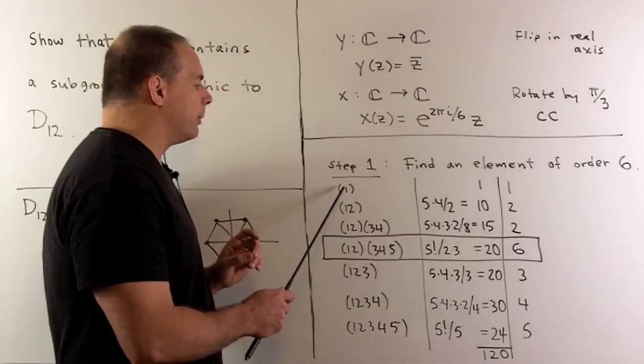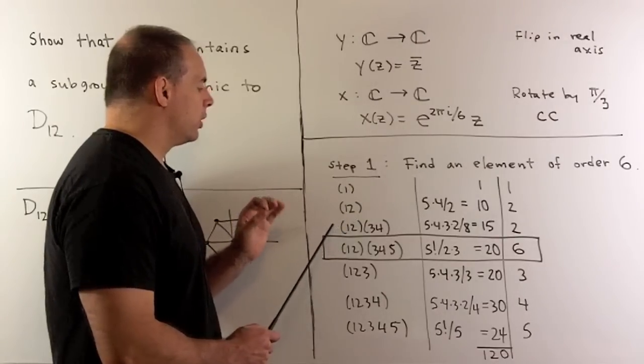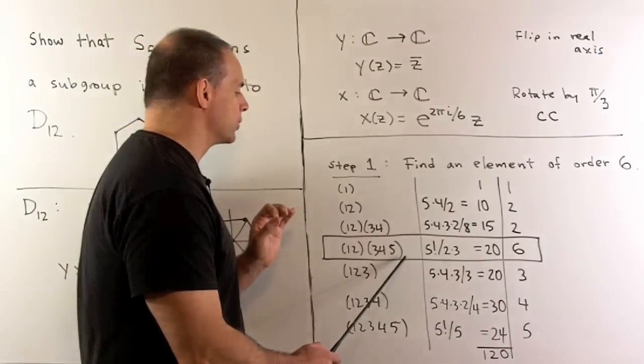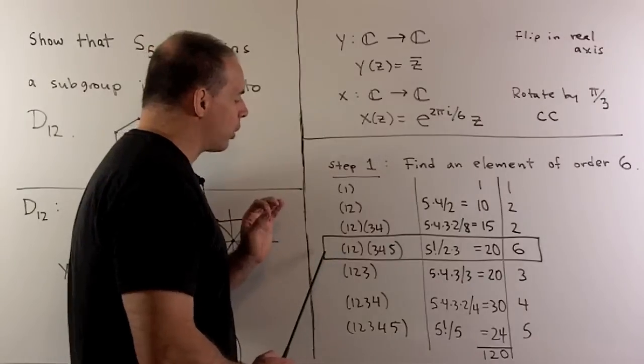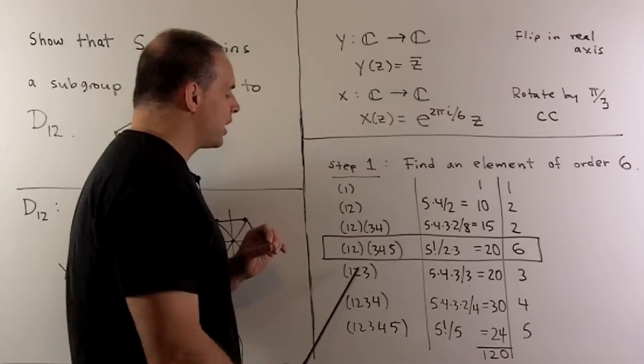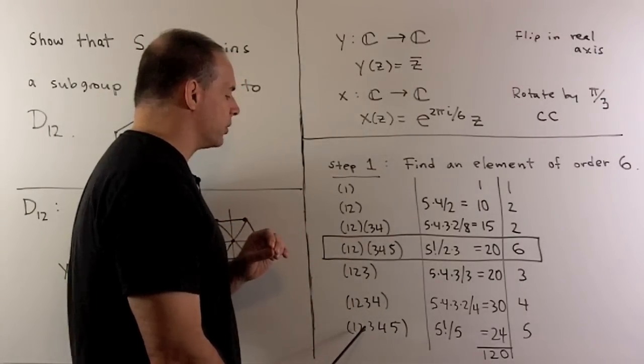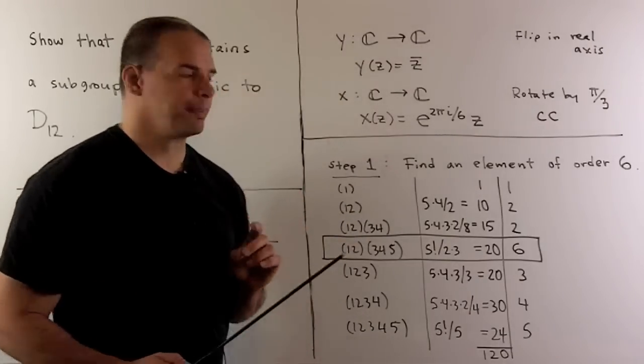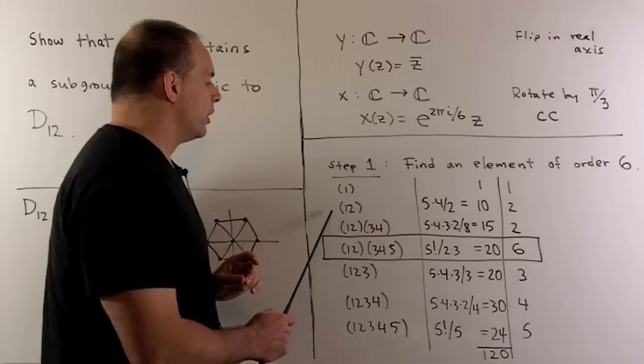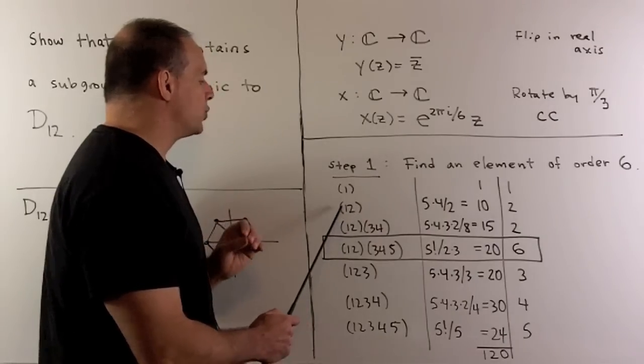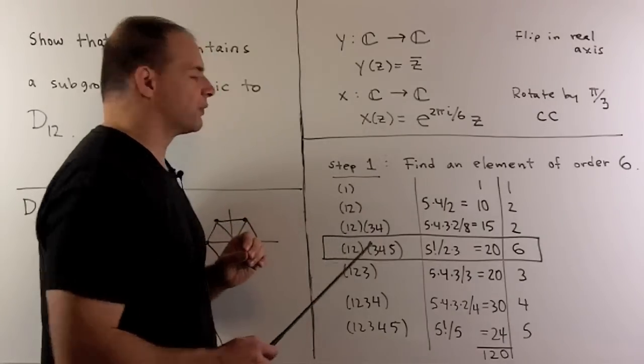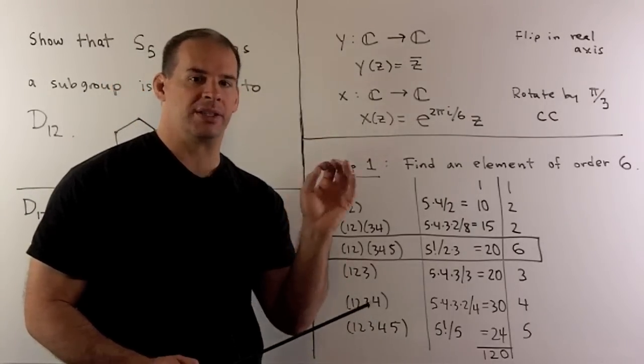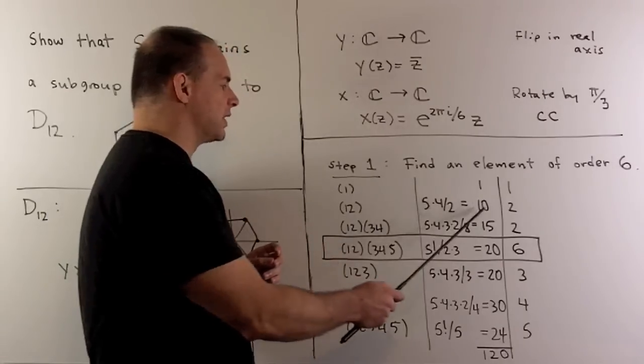We have the identity element, two cycles, disjoint products of two cycles, disjoint products of two cycles with three cycles, then three cycles, four cycles, and five cycles. For counting, just combinatorics. We have one identity element. For the number of two cycles, I have five choices for slot one, four choices for slot two, then we divide by two because we can do a switch and get the same two cycle. So we'll have ten of these elements.